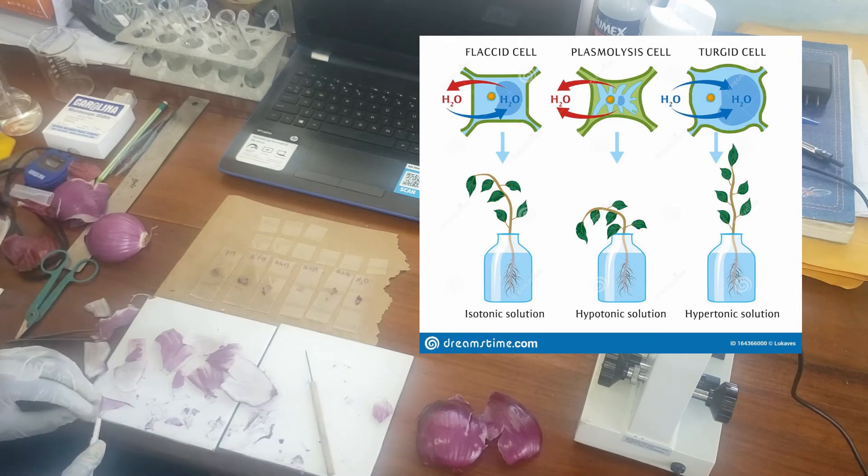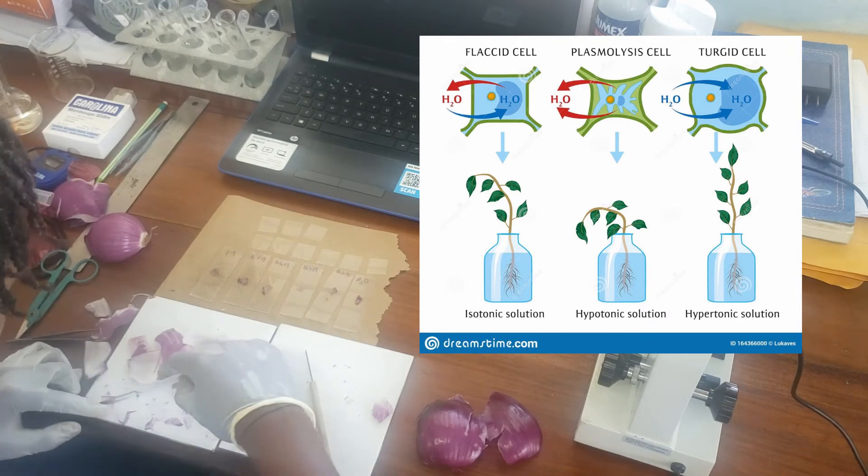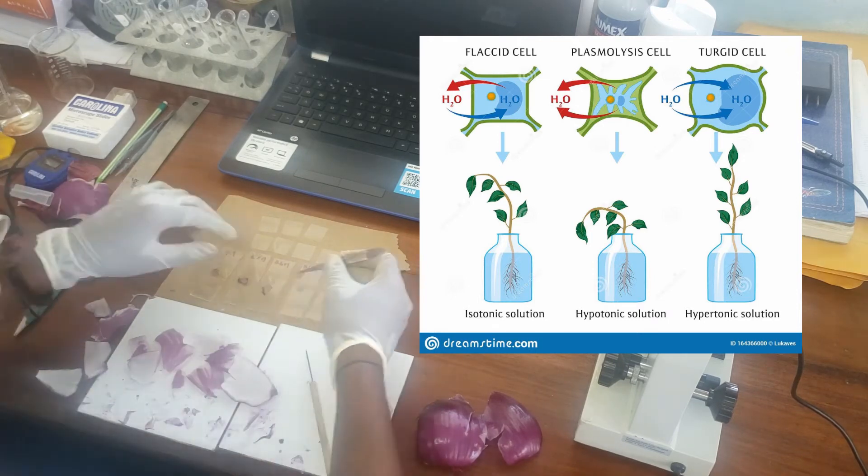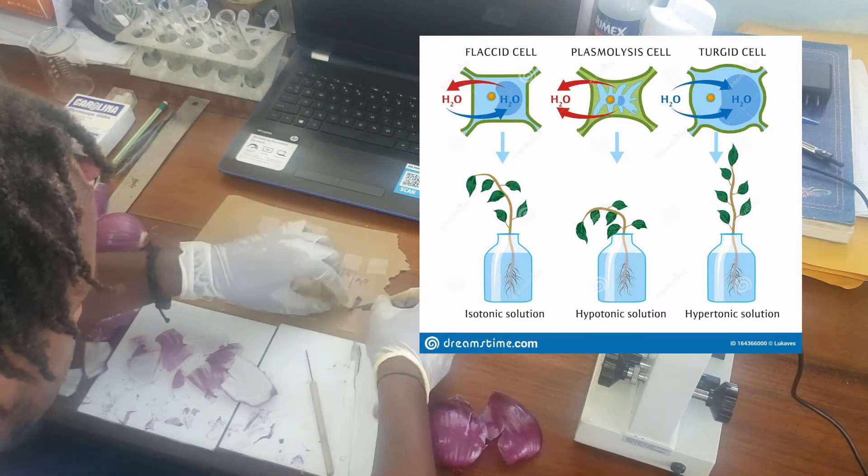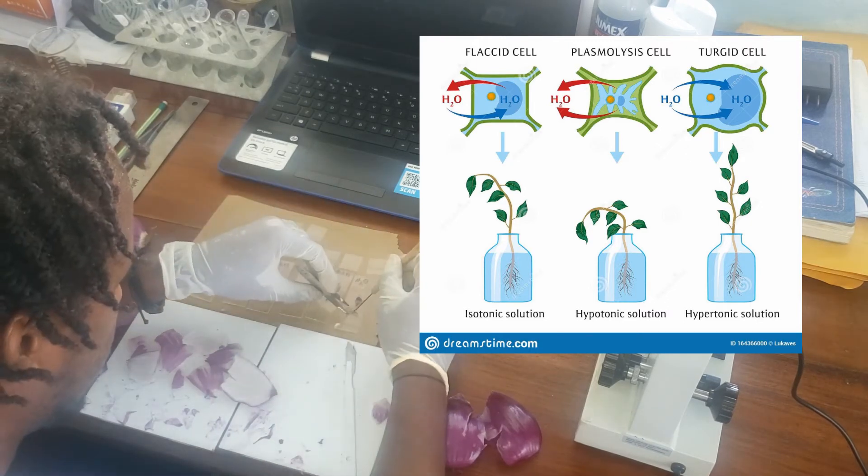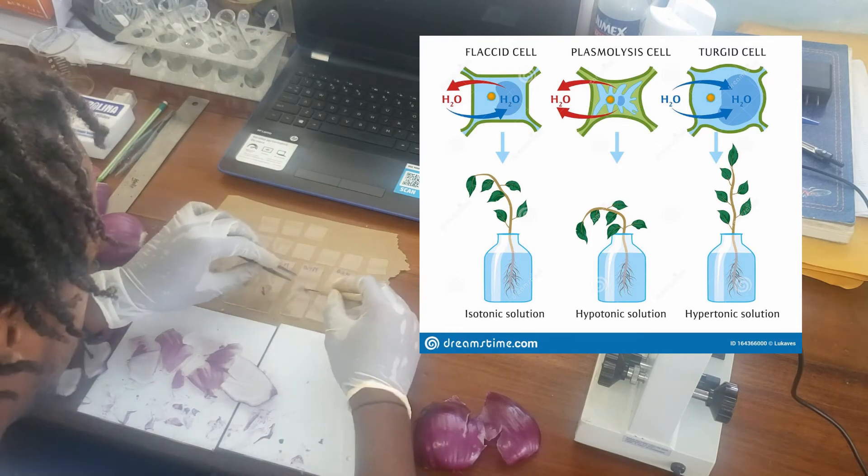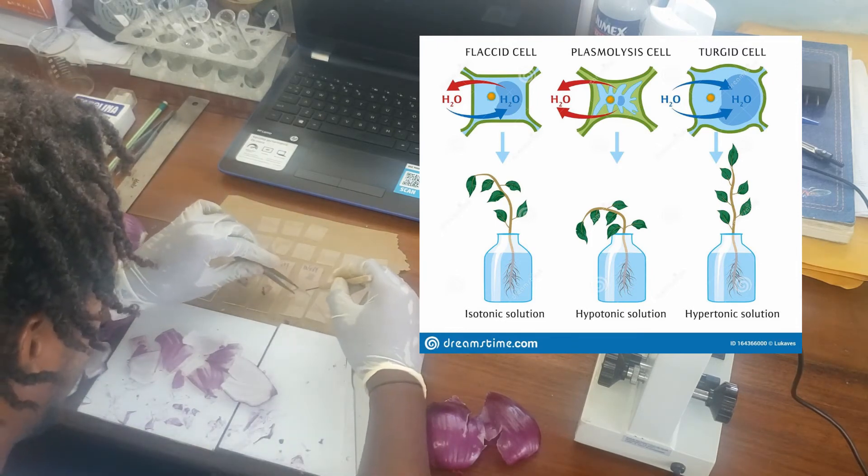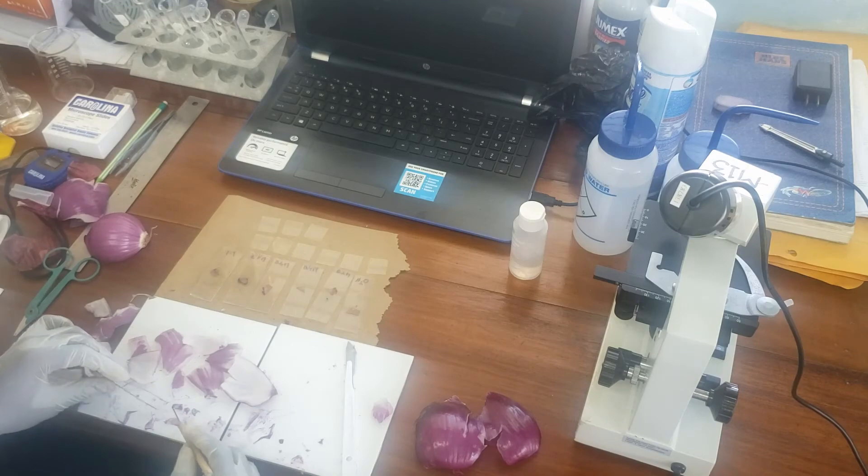In biology, we often tell students that a hypertonic solution, the R as in river, has less solute dissolved in it, so like pure water. And then the hypotonic solution, O for ocean, has more solute dissolved in it, so more like salt water.